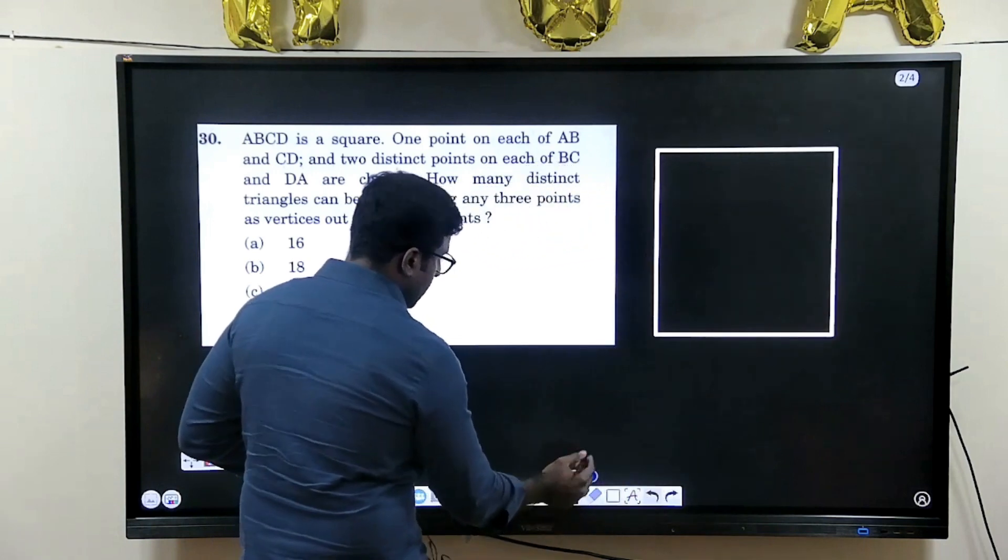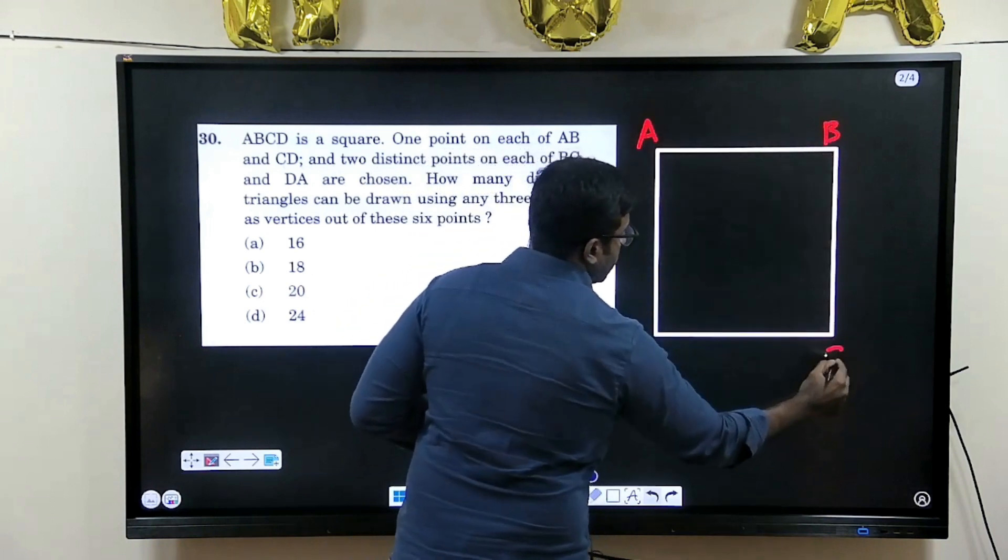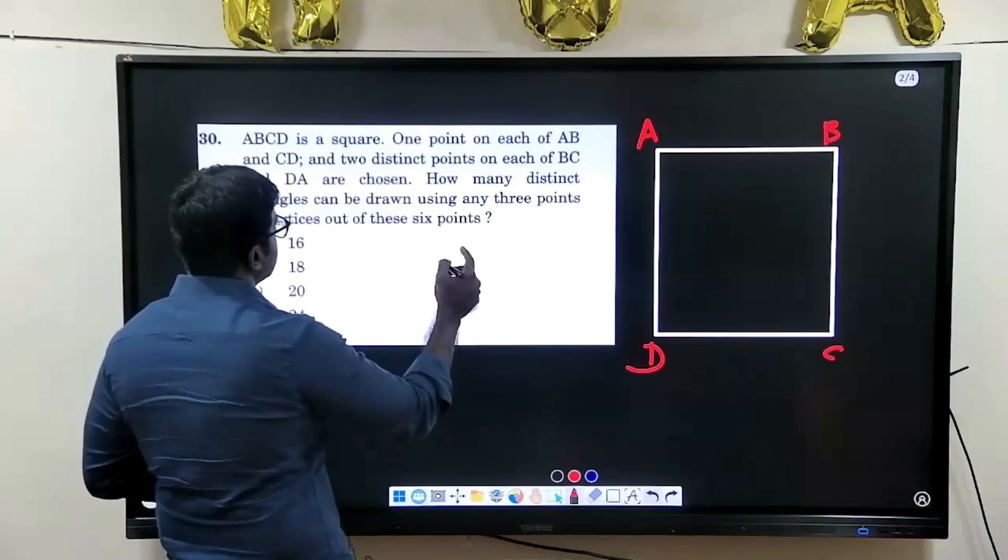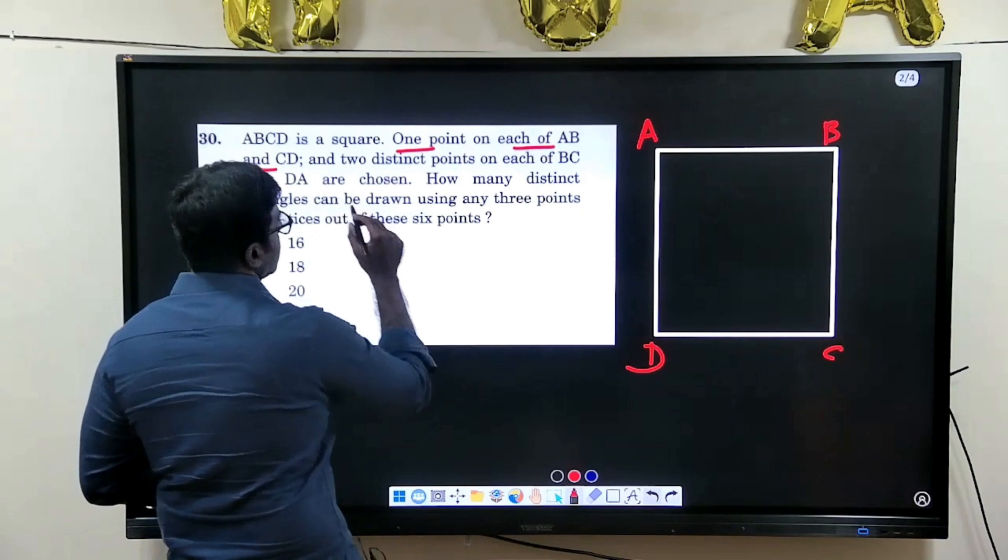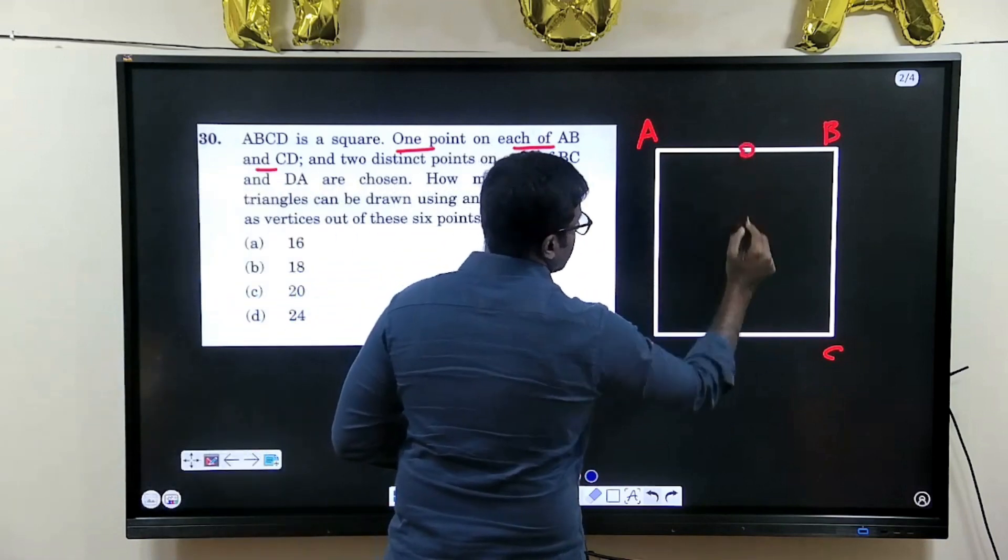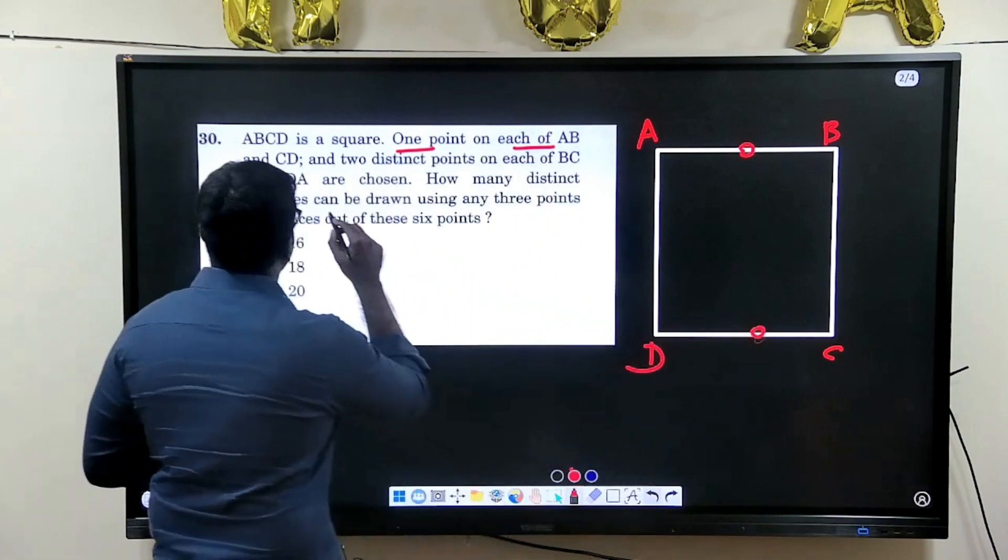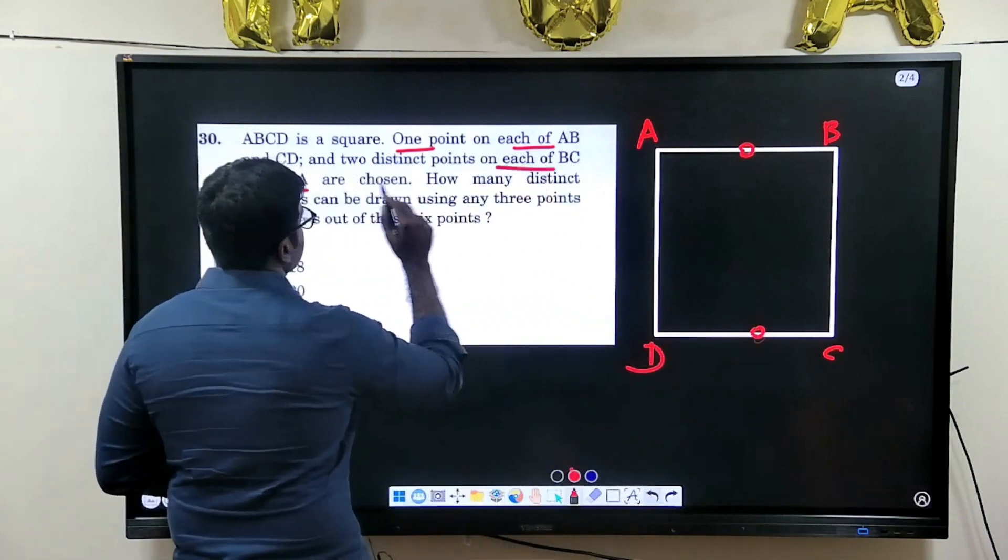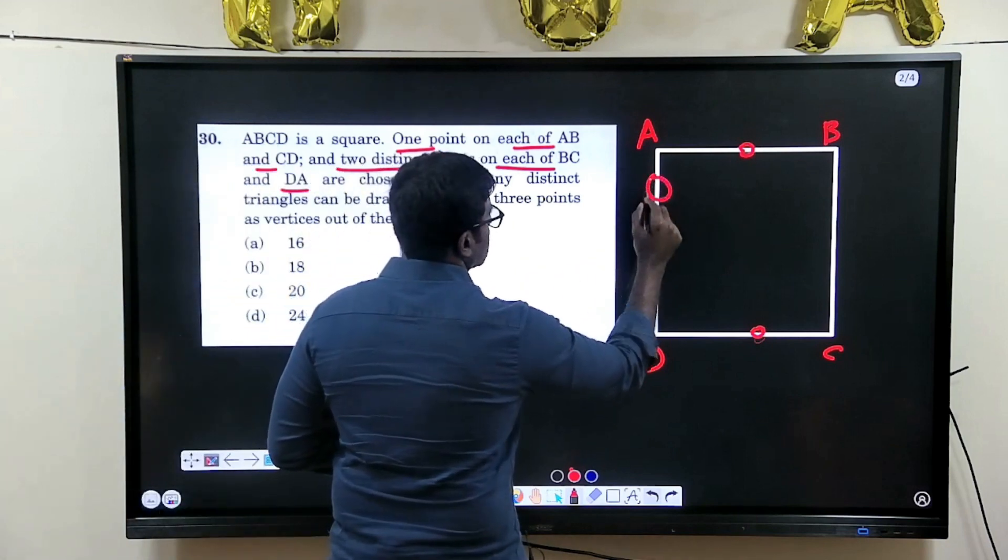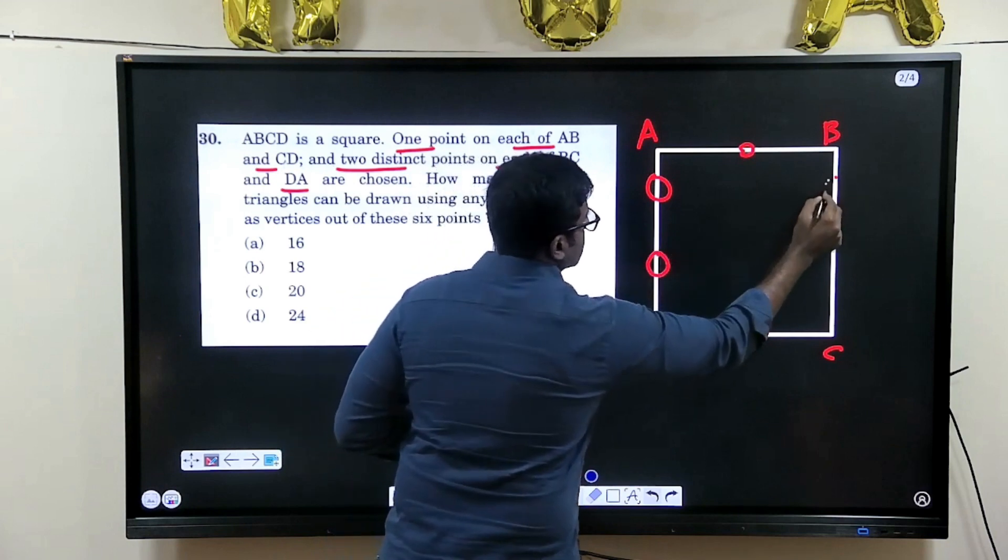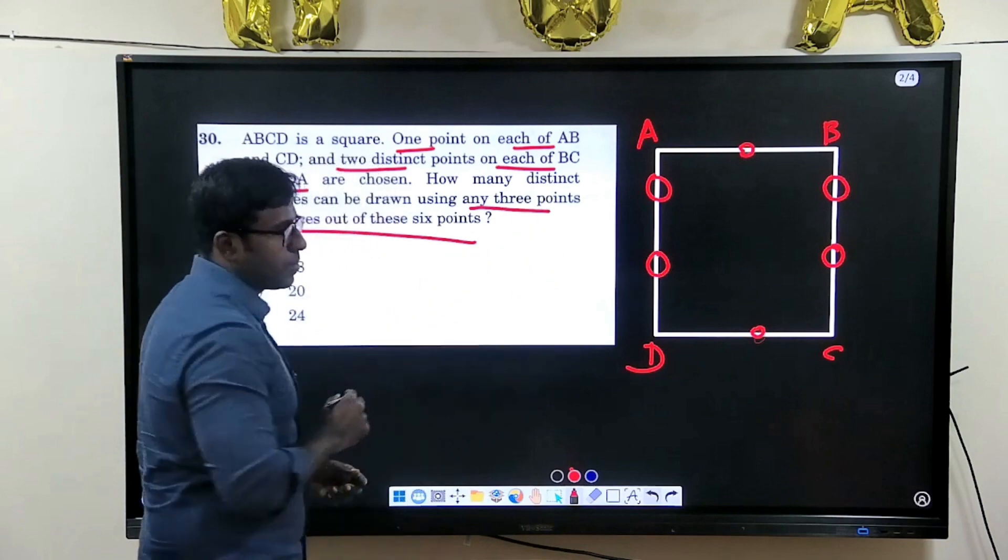If you consider AB, this is A, B, C and D. So what they say is that there is one point in each of AB and CD. So one point is here, one point is here. And one more thing that they specify is DA and BC, they have two distinct points. So you have two distinct points here, two distinct points here. So how many triangles can be formed using this?